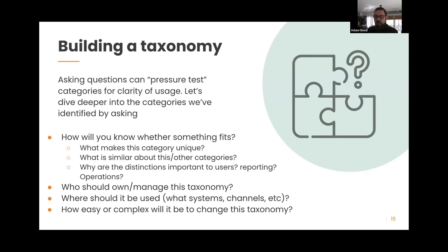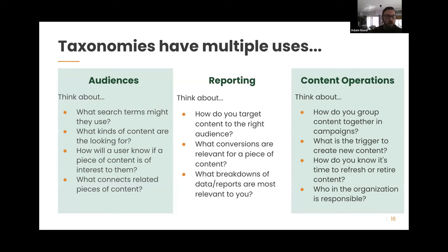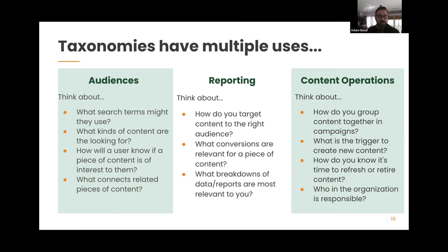Some other considerations when getting your taxonomy together: for your audiences, what search terms are they using, what kinds of content are they looking for, how will they know if content is relevant to them, and what connects pieces of content even if not explicit on your site? Think about reporting — what types of conversions matter, what reports do you want about your content? For content operations, how do you group content in campaigns? If you post a blog post or report, what other places can that topical taxonomy inform or connect different campaigns? Do you have emails on the topic sent out automatically? Are your experts on a topic engaged on social media using the topic hashtags you identified?